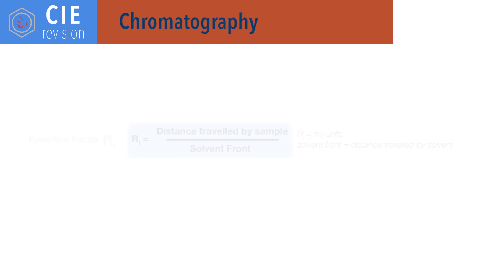For chromatography. Rf equals distance travelled by sample divided by distance travelled by the solvent front. Rf, or retention factor, values have no units.